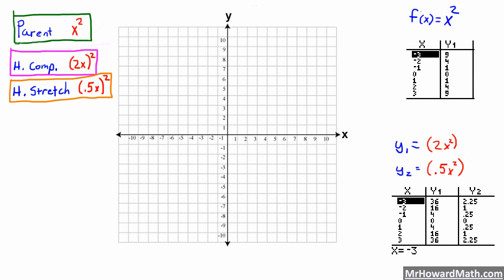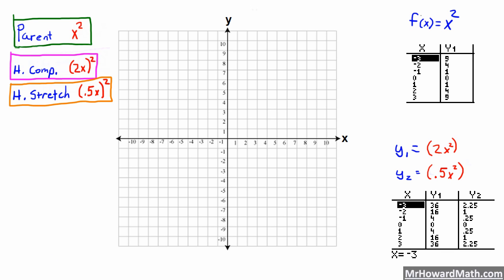We have our parent function y equals x squared, and we've got our table pulled from the calculator. y1 is 2x squared — our horizontal compression — and y2 is 0.5x squared — our horizontal stretch. We'll graph our parent function first. Our vertex is at 0, 0, and we're using the points 2, 4 and negative 2, 4 to fill in our graph, symmetrical on both sides.